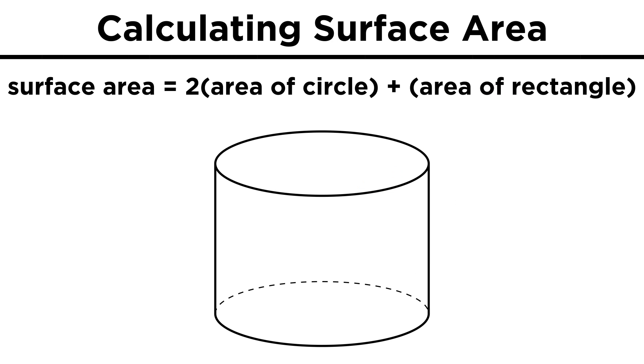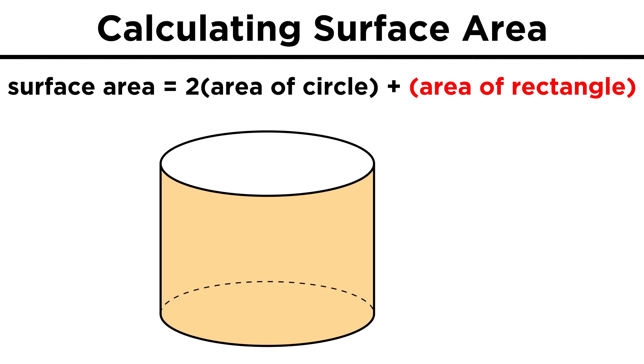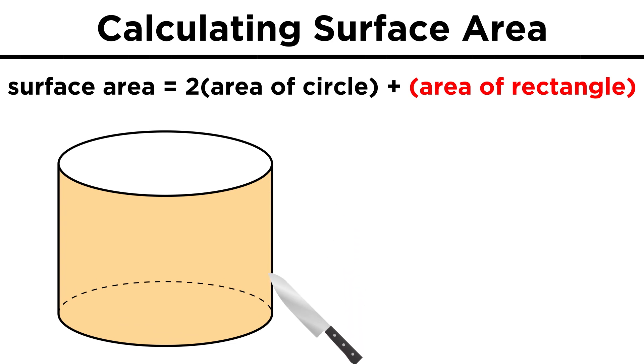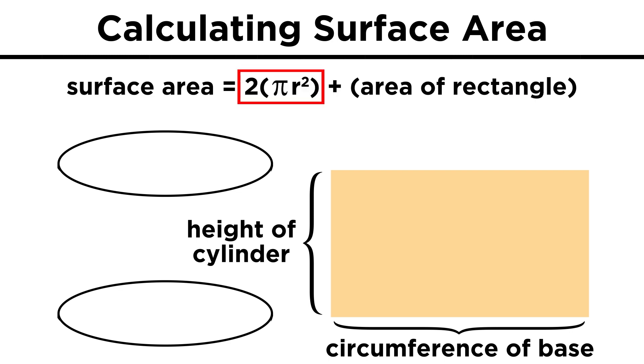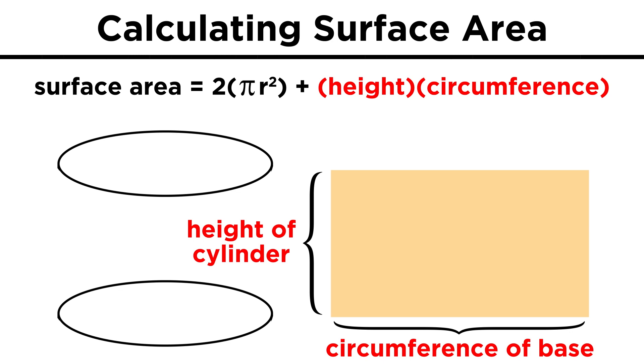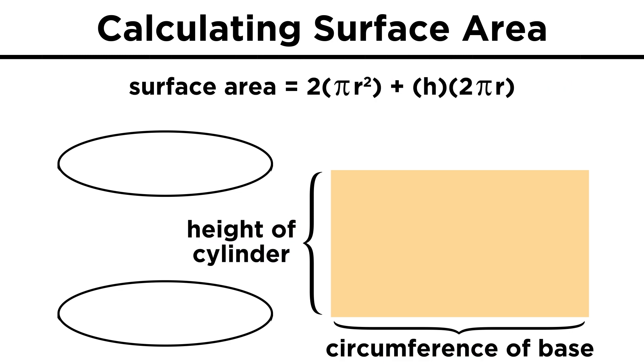What about a cylinder? This one seems like it would be complicated, but it's actually just two circles plus a rectangle that's curved around on itself. We can imagine slicing through the height of the cylinder, and unwrapping it to get this rectangle, which will have one side equal to the height of the cylinder, and another side equal to the circumference of the base of the cylinder. So the area of a cylinder is twice the area of the circle, since there's one on the top and one on the bottom, plus the area of this rectangle, which is height times circumference, which is pi D, or two pi R.